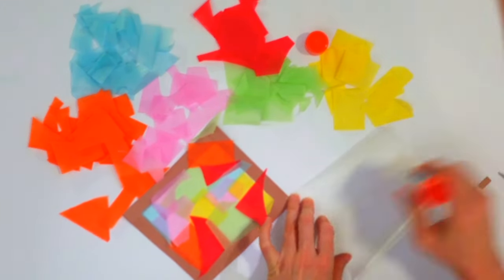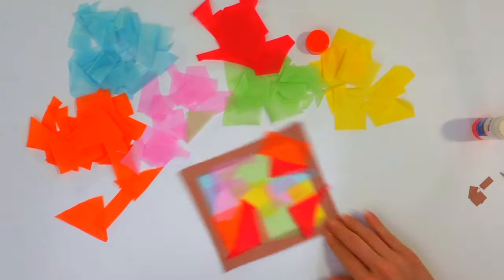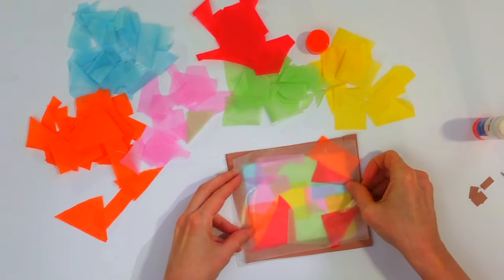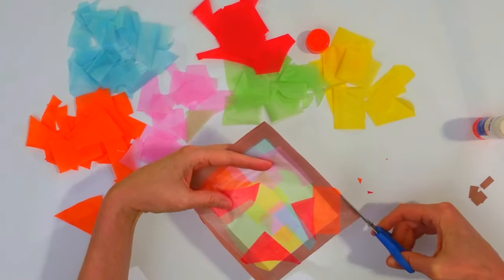Then you put the last piece of wax paper on top. Make sure you have it glued down. And then just trim the edges that are hanging over.